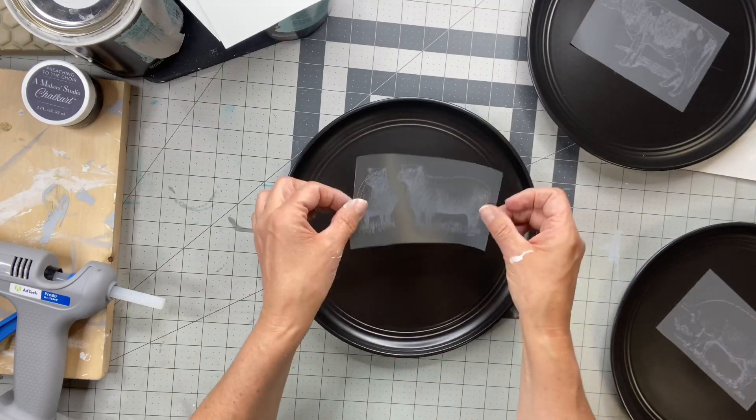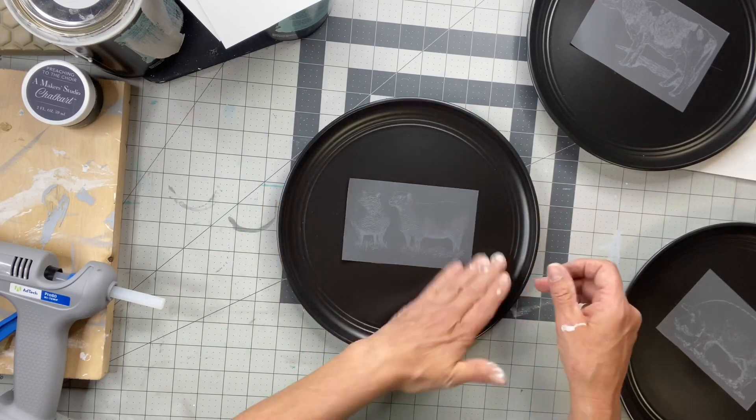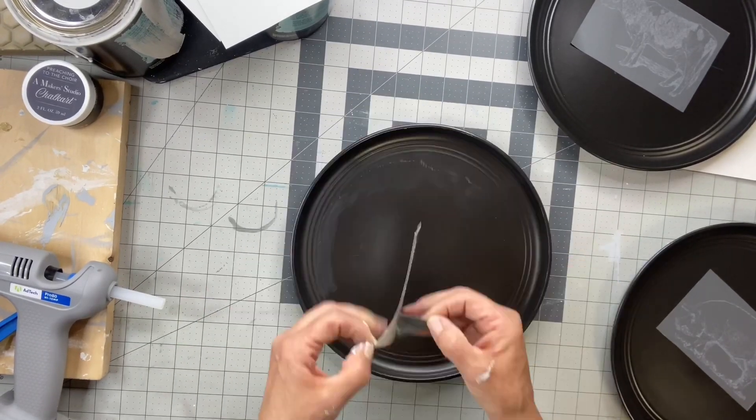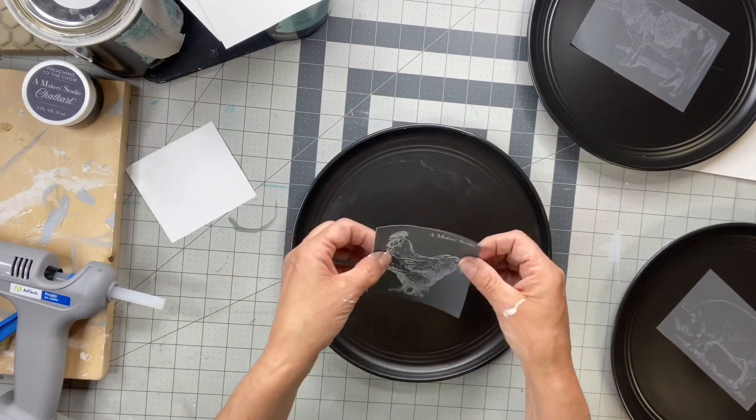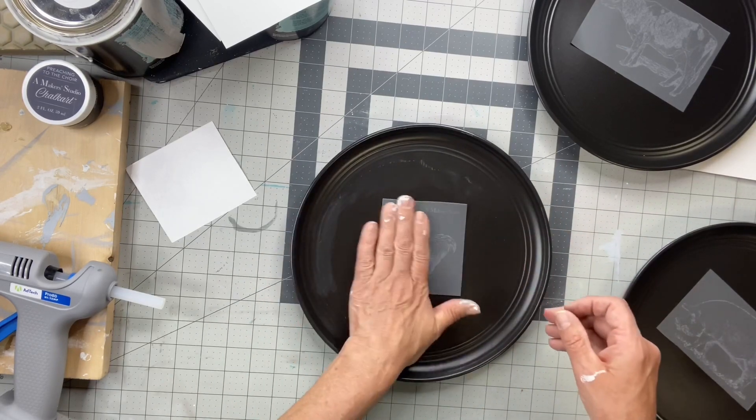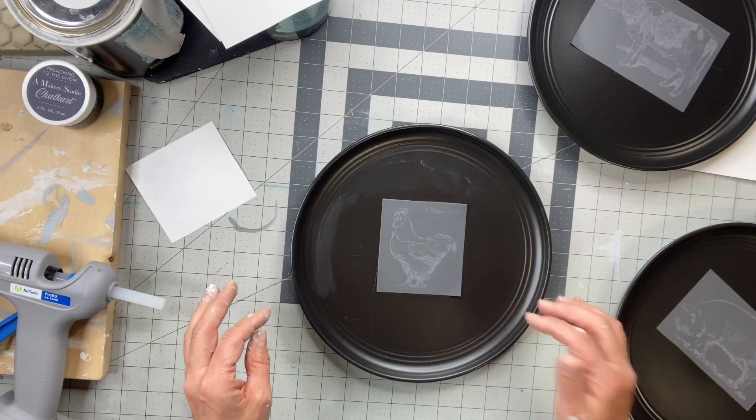I decided to place all my stencils on first. So once I got the ceramic paint out, I'm going to be using Angel Wings today, which is a white ceramic paint. This is a no-bake paint.